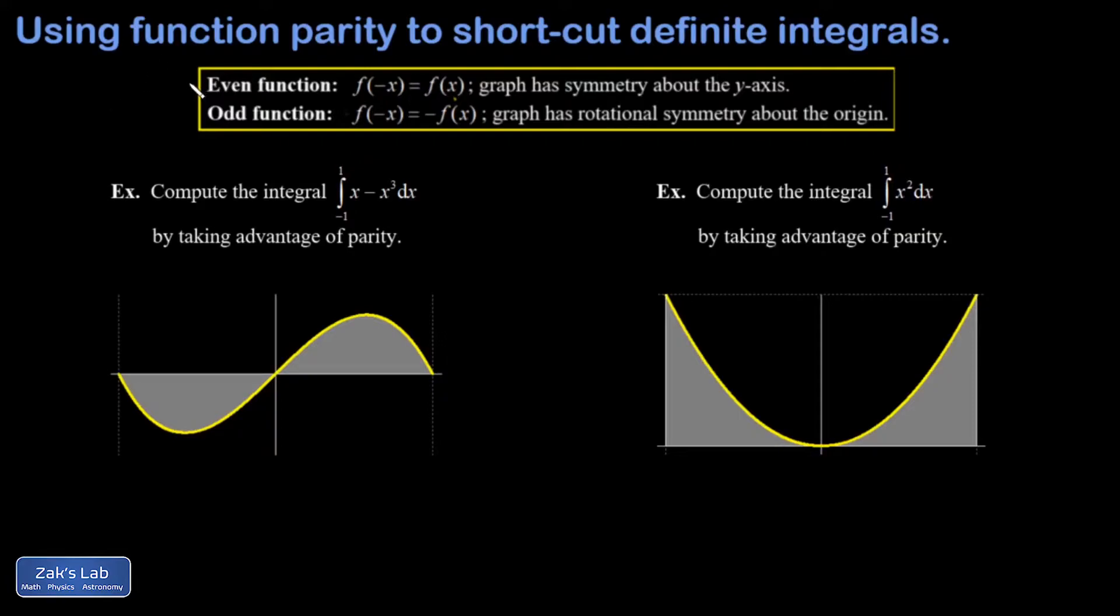Just as a quick reminder, and I'll post a link to the video where I first brought this up, an even function has the property that f of negative x equals f of x, and it ends up with a symmetry about the y-axis. Our even function in the examples here is the second one. It's f of x equals x squared. It's symmetric about the y-axis.